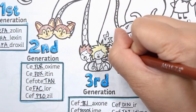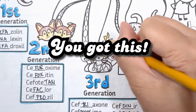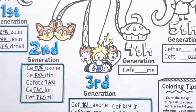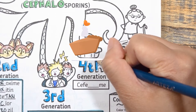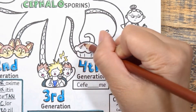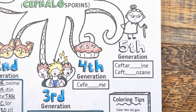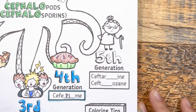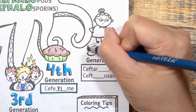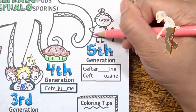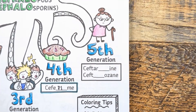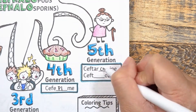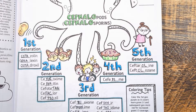Stay with me as the last two generations are the easiest to remember. Fourth generations have the root -pime in them, so imagine a pie on the fourth tentacle — the pie stands for cefepime. Fifth generations have the root -oline/-azane in them, so think of an old person on the fifth tentacle. These drugs include ceftaroline and ceftolozane. Color in the old person to give your brain some time to memorize this. Take a couple of minutes to go over which drugs belong to which generation using this visual to allow that information to really sink in. If you need to pause this video and quiz yourself to see how much you can remember, go ahead and do it now.